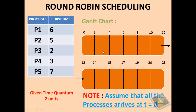Let us now see the working of the round robin algorithm. The first process in the ready queue is P1 with a burst time of 6. As the predefined time quantum is 2 units, it will get preempted after 2 units of time. P1 will execute for 2 units, leaving 4 units remaining, and it will be preempted and put back into the ready queue. The next process in the ready queue is P2, allocated to the CPU with a burst time of 5.